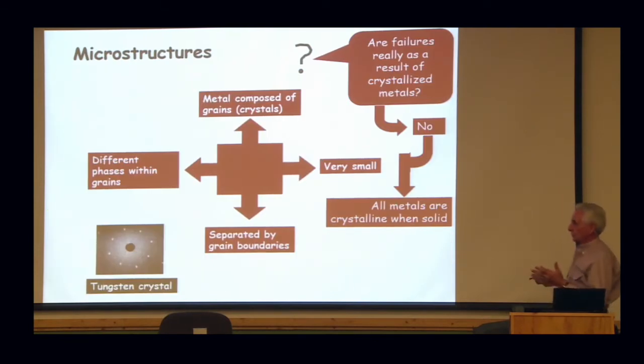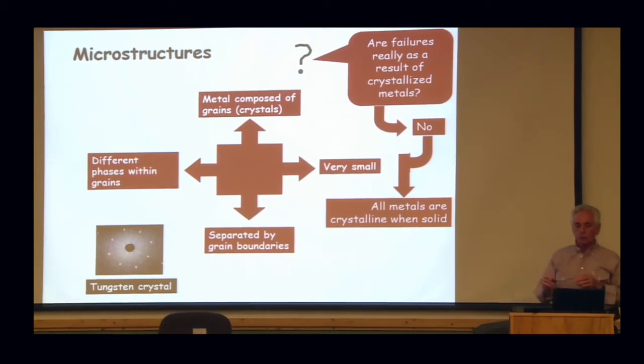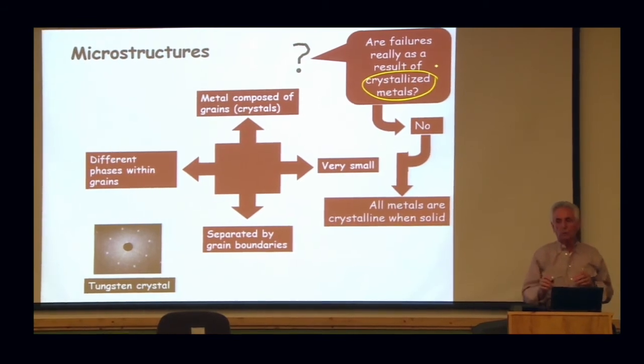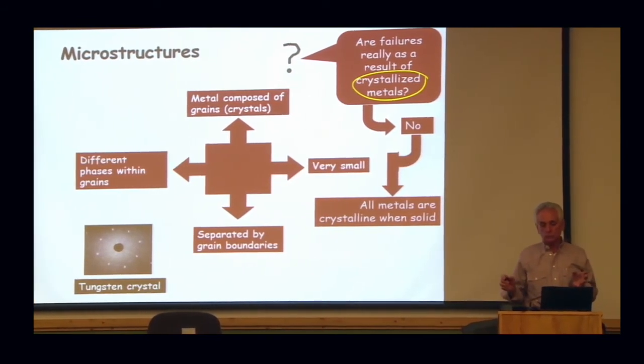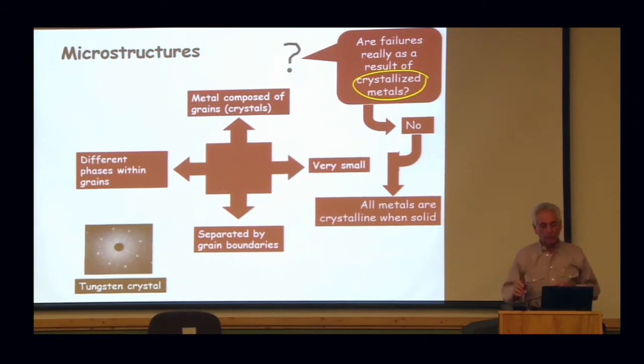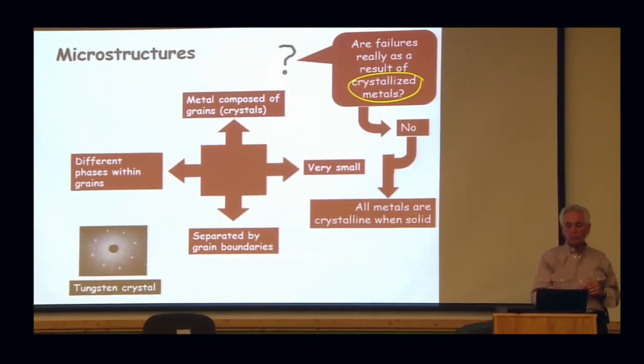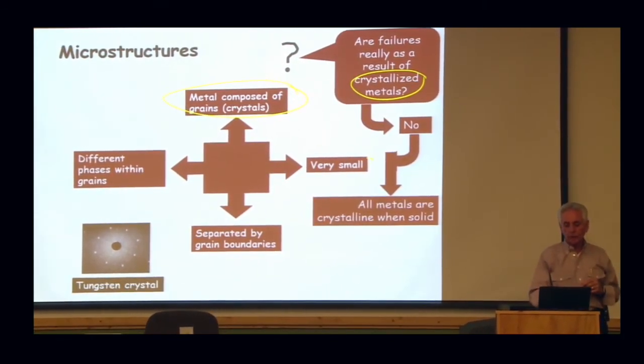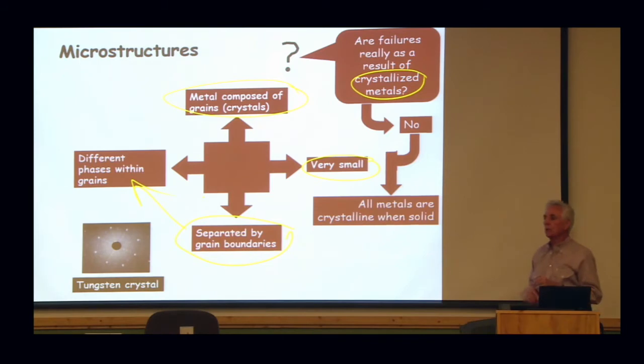Now, microstructures. Things we've got to look at under a microscope. They ask the question up there, are failures really a result of crystallized metal? No. All metals when they get solid are crystal. So we got rid of that already. So metals are composed of grains or crystals. They're not very big. They're separated by grain boundaries. And there are those different phases in those grains.